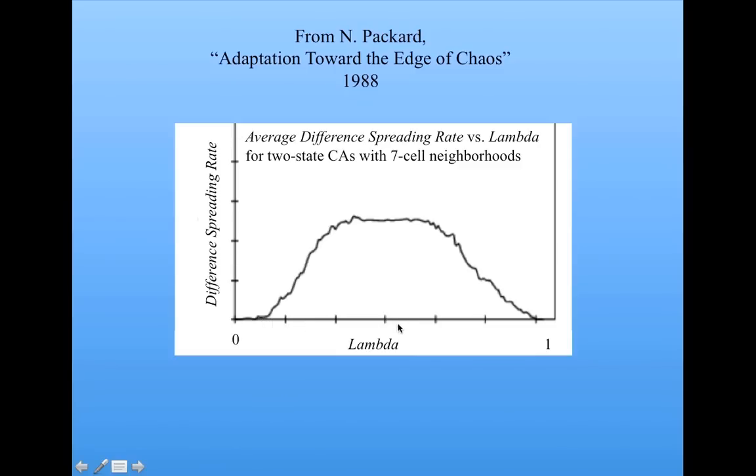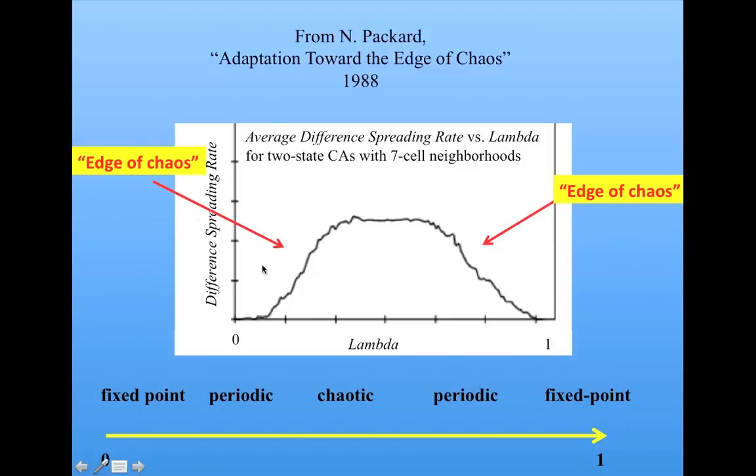He plotted this as a function of lambda, and he finds here you have very ordered behavior. Here you have kind of a transition to more chaotic behavior, and here you really have chaos with sensitive dependence on initial configurations. Indeed, you do get this kind of behavior that Langton hypothesized, Packard showed in his experiments. Packard called these regions the edge of chaos. That is, the place where things are not completely ordered, and yet they're not completely chaotic and random. This corresponds roughly to Wolfram's class four, that is, those interesting cellular automata with long-lived localized structures, such as in rule 110.